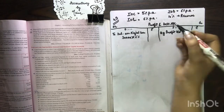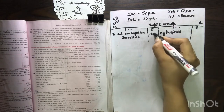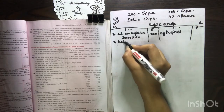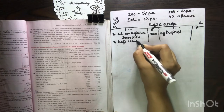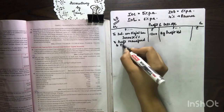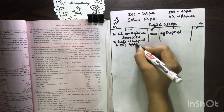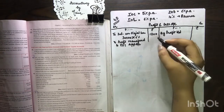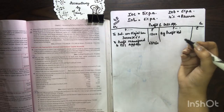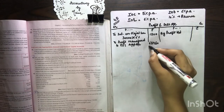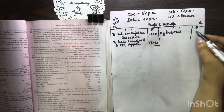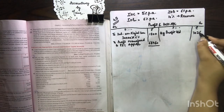So profit transferred to P&L Appropriation account, which is given, which is 68,460. Yes students, so we have the net amount, which we will calculate the opening profits, which will be 70,260.